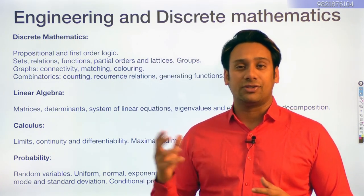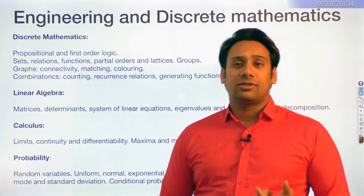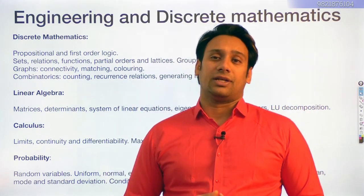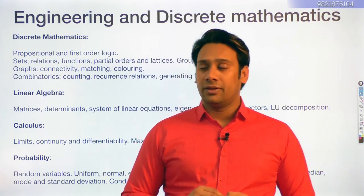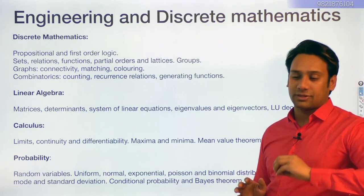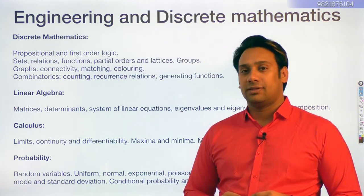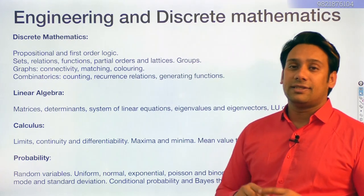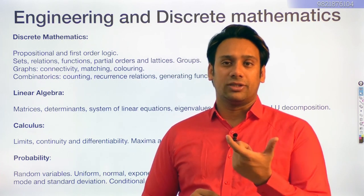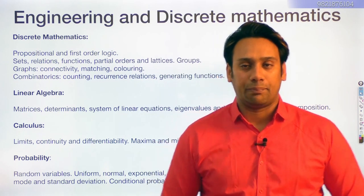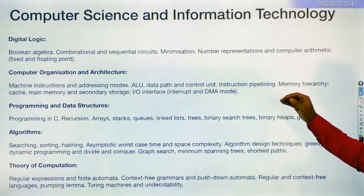Permutations and combinations from Discrete Mathematics are used extensively across every subject. Out of 100 marks, you have 15 marks for aptitude, 15 marks for mathematics — totaling 30 marks — and the remaining 70 marks are from your core technical area. The core technical subjects include Digital Logic, Computer Organization and Architecture, Programming and Data Structures, Algorithms, Theory of Computation, Compiler Design, Operating System, DBMS, and Computer Networks.